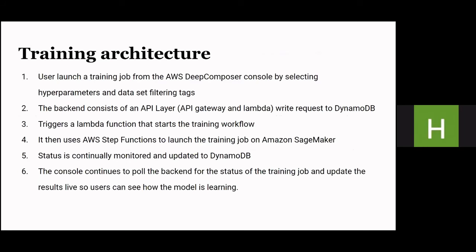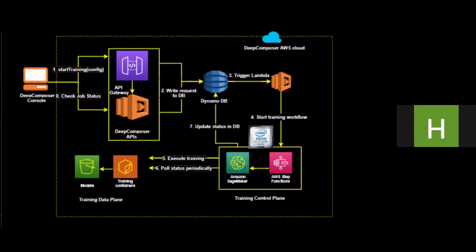Moving forward to training architecture: in the AWS Deep Composer cloud, the user enters the training configuration in the Deep Composer console and training starts. The backend consists of an API layer — an API Gateway with a Lambda function that makes requests to DynamoDB. A trigger Lambda function starts the training workflow, using the Amazon Step Function to launch the training job on Amazon SageMaker. The status is continually monitored and updated to DynamoDB. The console continues to poll the backend for the status of the training job and updates the results so live users can see how the model is training.